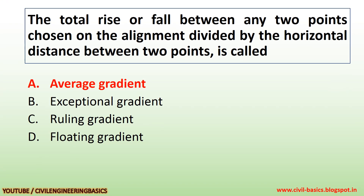The total rise or fall between any two points chosen on the alignment divided by the horizontal distance between those two points is called the average gradient.